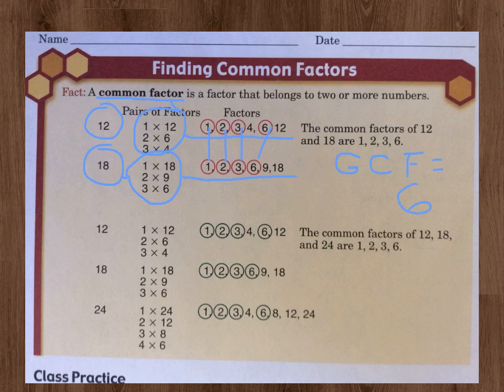If you look down lower, what they did was they took 3 numbers and did the same thing here. 12, 18, and 24. They first came up with their pairs of factors. For 12, they have 1 times 12, 2 times 6, 3 times 4. And then they wrote them out in numerical order: 1, 2, 3, 4, 6, and 12.